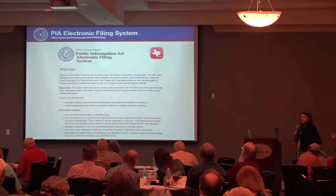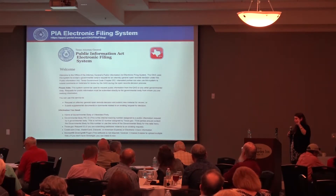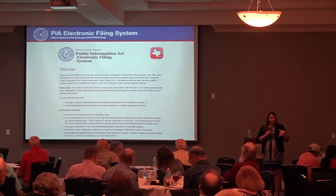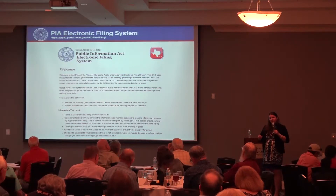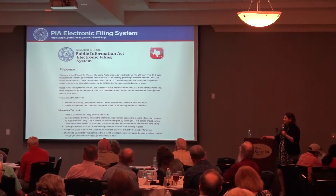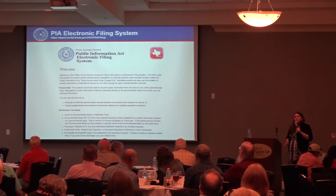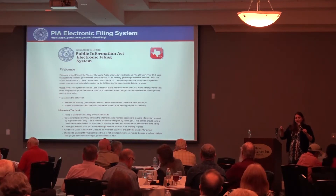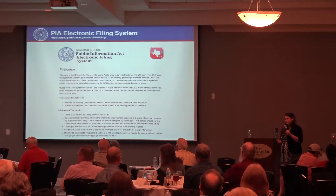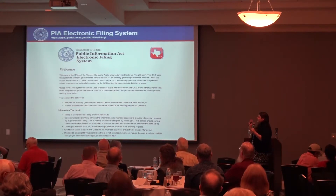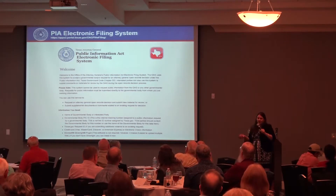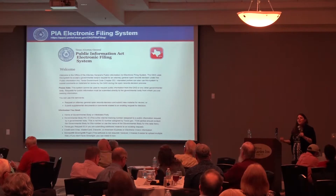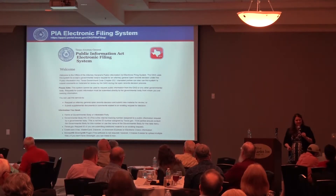There are only two valid ways to submit information for an open records letter ruling: by mail, hand-delivery, or courier, or through our electronic filing system at Texas.gov. I can receive complaint-related information informally by email or fax, but for actual ruling submissions it must be done through one of those two methods. This is especially important if you are on day 10 and it's 8 o'clock at night.